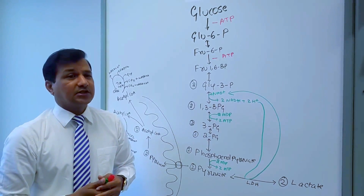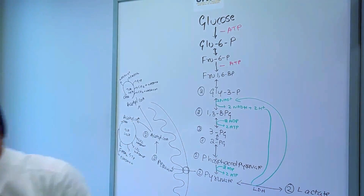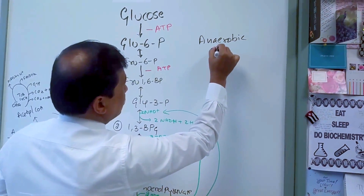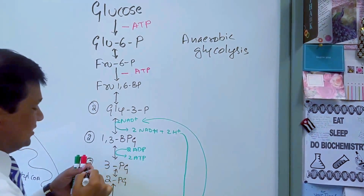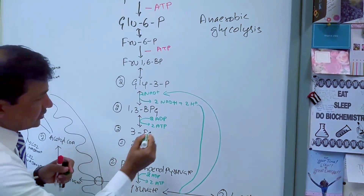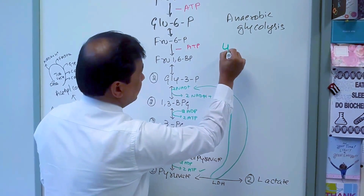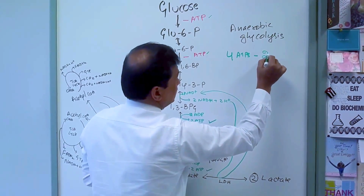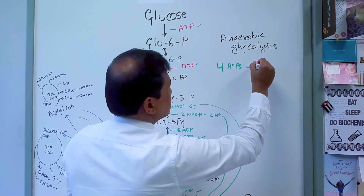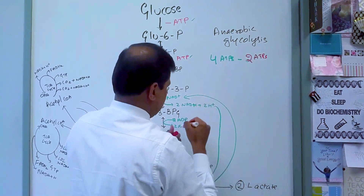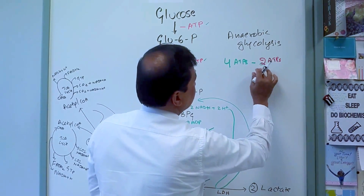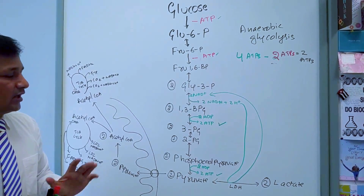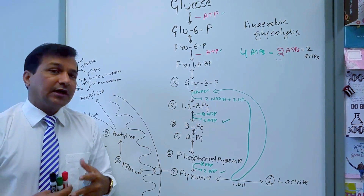Let's calculate total ATPs under anaerobic glycolysis. You produce four ATPs — two from phosphoglycerate kinase and two from pyruvate kinase — and you consume two ATPs initially. So the net gain is two ATPs under anaerobic glycolysis.